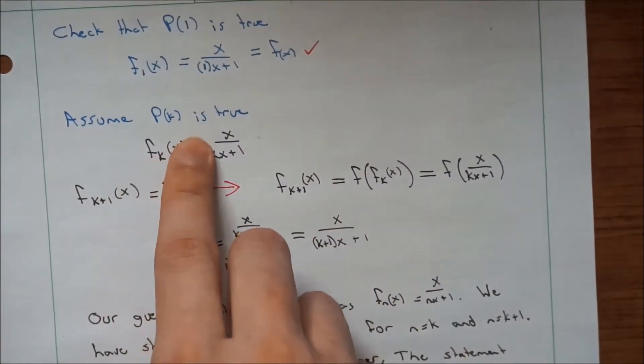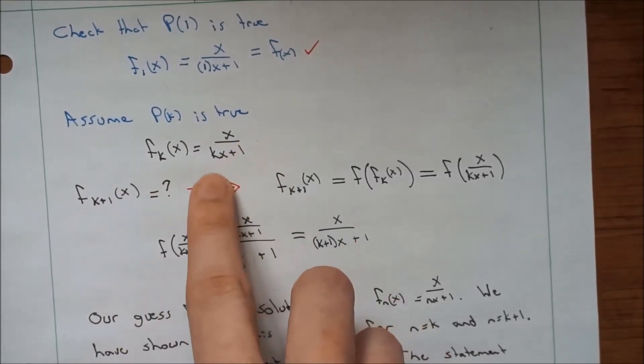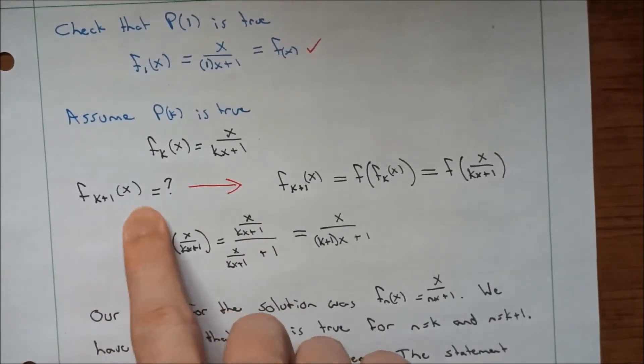Now we're going to assume that P(k) is true. So, f_k(x) equals x/(kx+1). But what's f_{k+1}(x)?